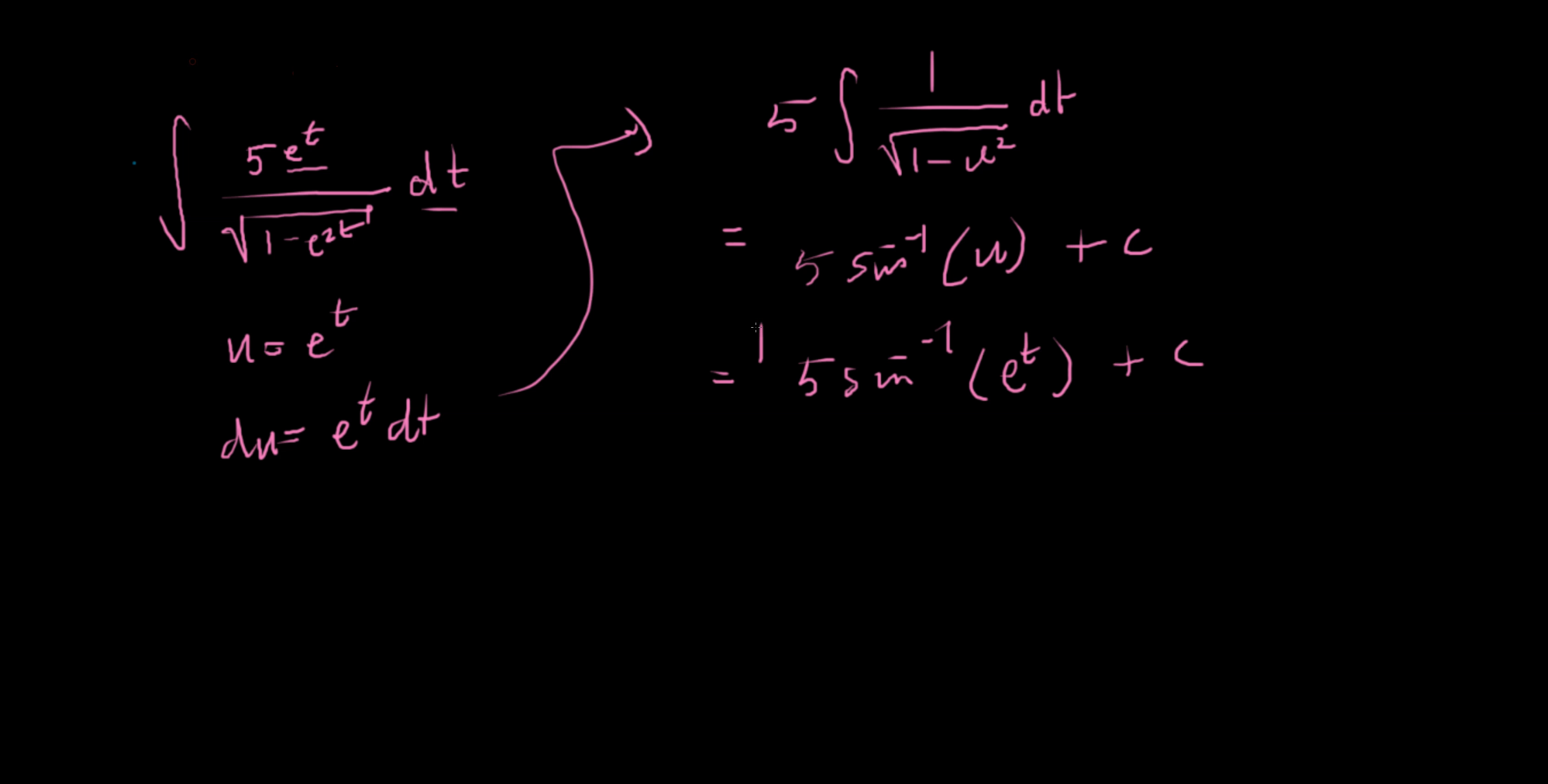So again, deceptively simple. You have to think a few steps ahead rather than just going in and plugging in the hardest function you can find for u. Think a step ahead and think, hey, how can I cancel out what's in the numerator here?